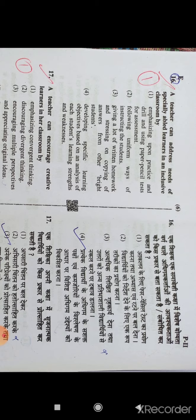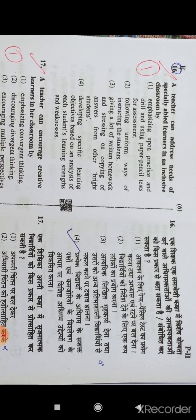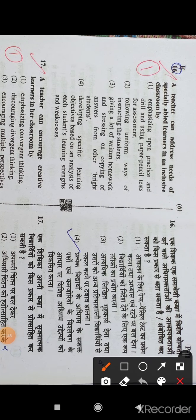Question 16: A teacher can address needs of specially-abled learners in an inclusive classroom by developing specific learning objectives based on an analysis of each student's learning strengths and weaknesses.